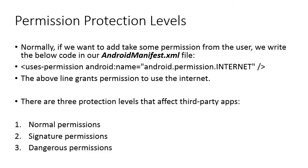Now let's talk about permission production levels. Normally when we need to add a permission for users, we write it in our manifest file like this: uses-permission android:name and then android.permission — for example, if I want to add internet permission so that my application can access the internet, I enable the internet permission here. This above line grants permission to use the internet. Basically we have three production levels which affect third-party apps.